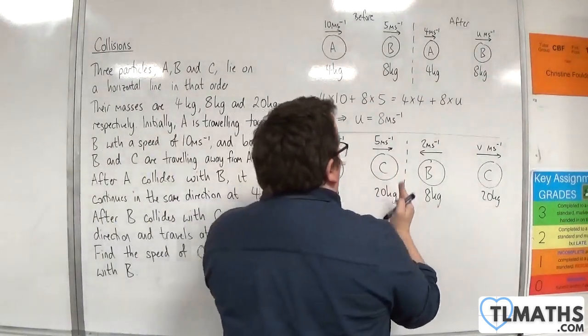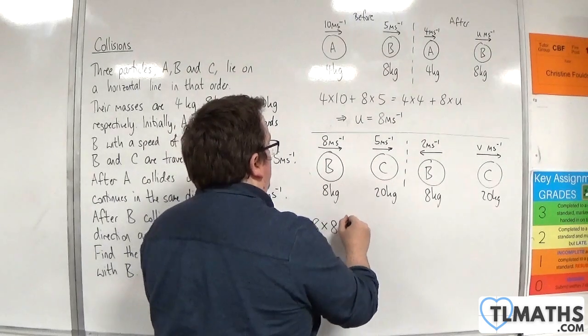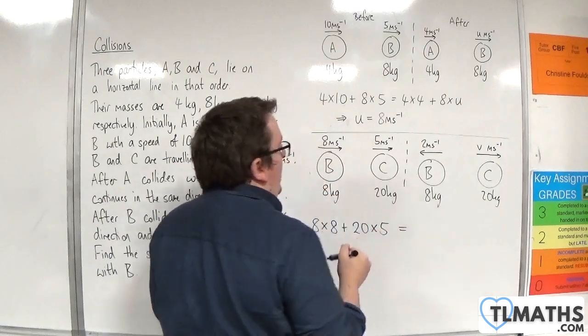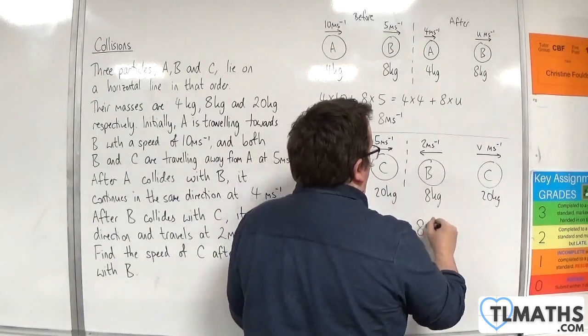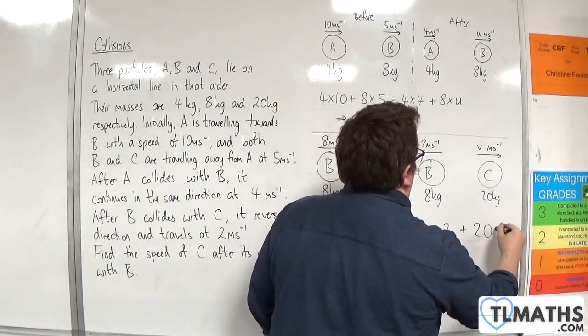So the total momentum before will be 8 times 8 plus 20 times 5. And that's going to be equal to 8 times minus 2 plus 20 times V.